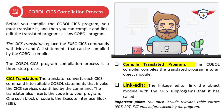The COBOL CICS program compilation process is a three-step process. The first step is CICS translation: the CICS translator converts each CICS command into a suitable COBOL statement that invokes the CICS service specified by that command. The translator also inserts code into your program — one such block is the EXECUTE INTERFACE block, whose fields provide information about the current task.